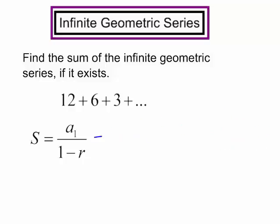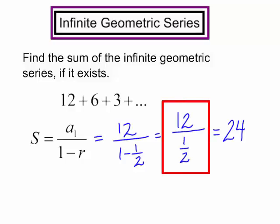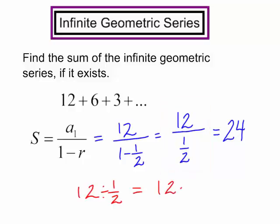So I have a sub 1 is 12 and the common ratio is 1 half. Let's plug that into our formula. That will be 12 over 1 minus 1 half, which will be 12 over 1 half. And your answer is 24. Remember, 12 divided by 1 half is the same as multiplying by the reciprocal.